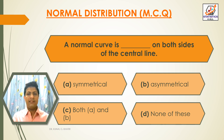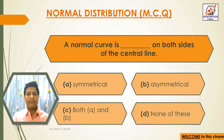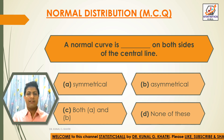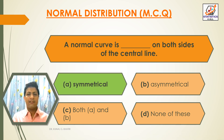Next question: a normal curve is dash on both sides of the central line. Option A: Symmetrical. Option B: Asymmetrical. Option C: Both A and B. Option D: None of these. The answer is Option A — a normal curve is symmetrical on both sides of the central line.